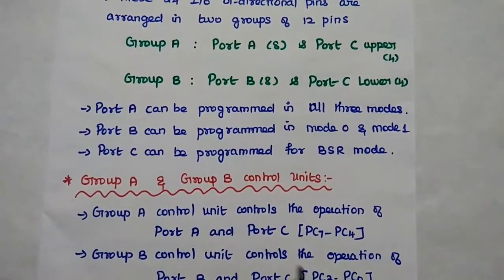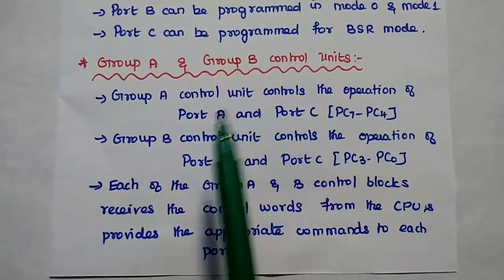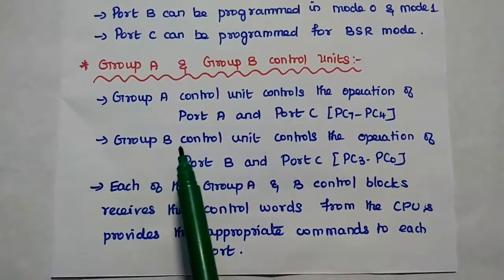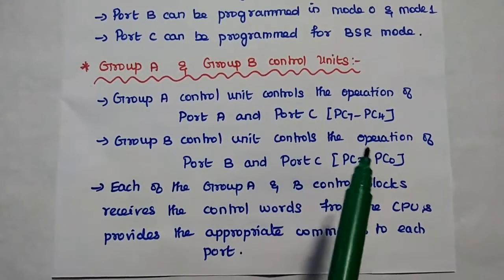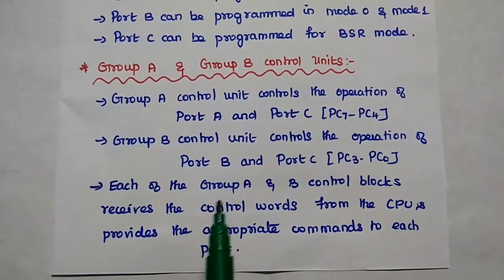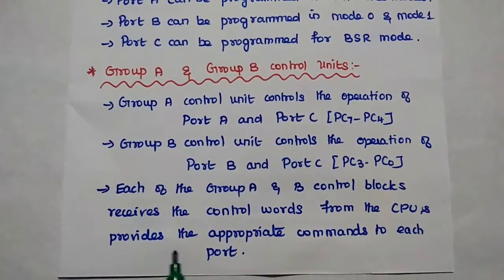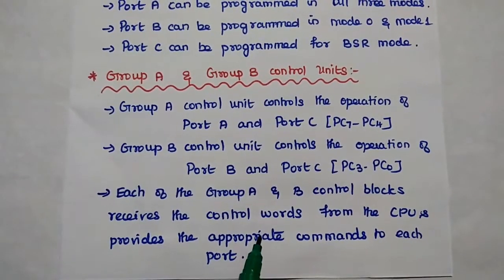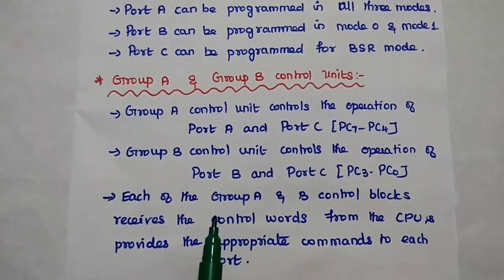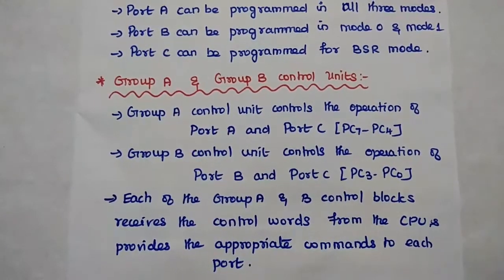Group A Control unit controls the operation of Port A and Port C upper 4 bits. Group B Control unit controls the operation of Port B and Port C lower bits. Each of the Group A and B control blocks receives the control words from the CPU and then provides the appropriate commands to each port. This control word is generated by the Timing and Control Logic unit.